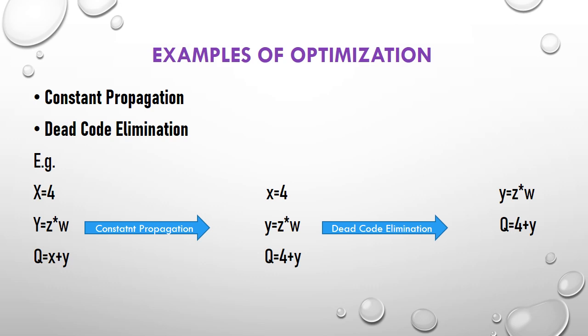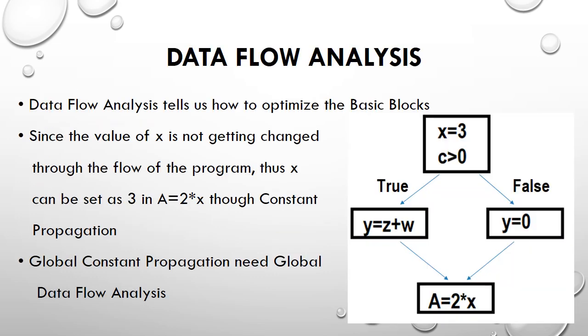Now x = 4 is a statement where x is no longer used anywhere else, so it becomes dead code. We remove it, leaving only two statements: y = z * w and q = 4 + y. We applied two optimizations — first constant propagation, then dead code elimination — reducing the number of lines of code.